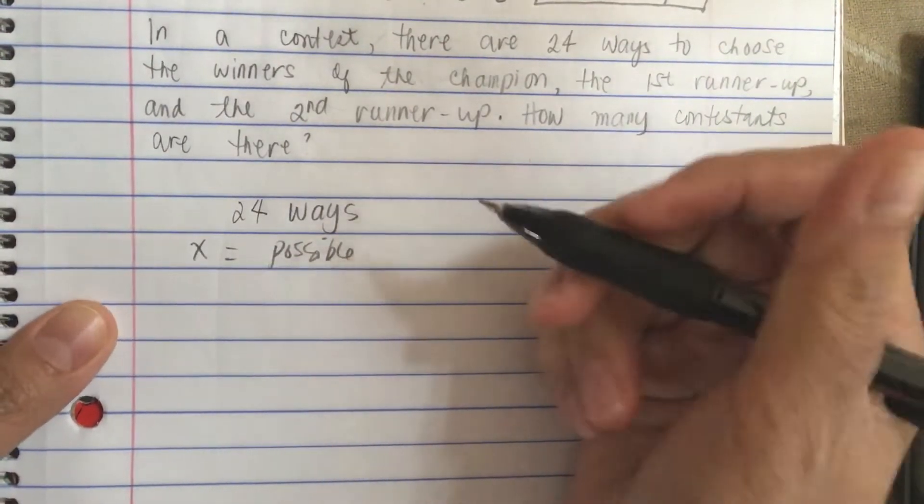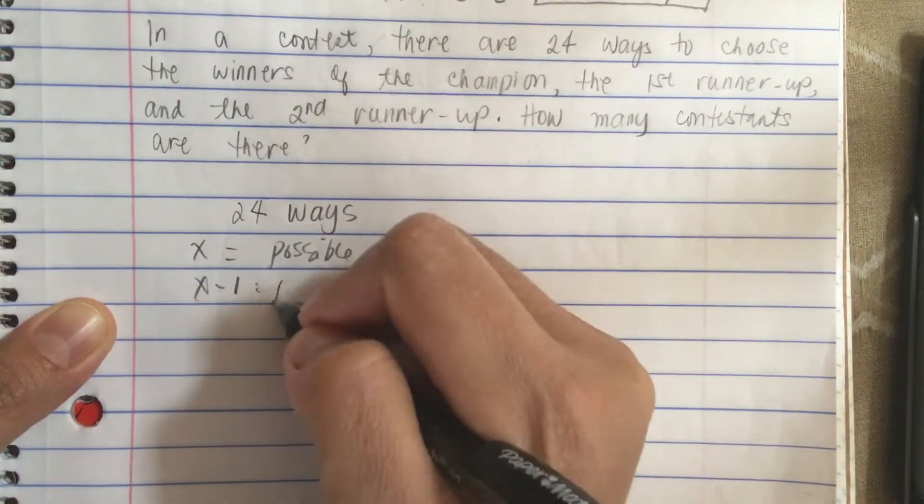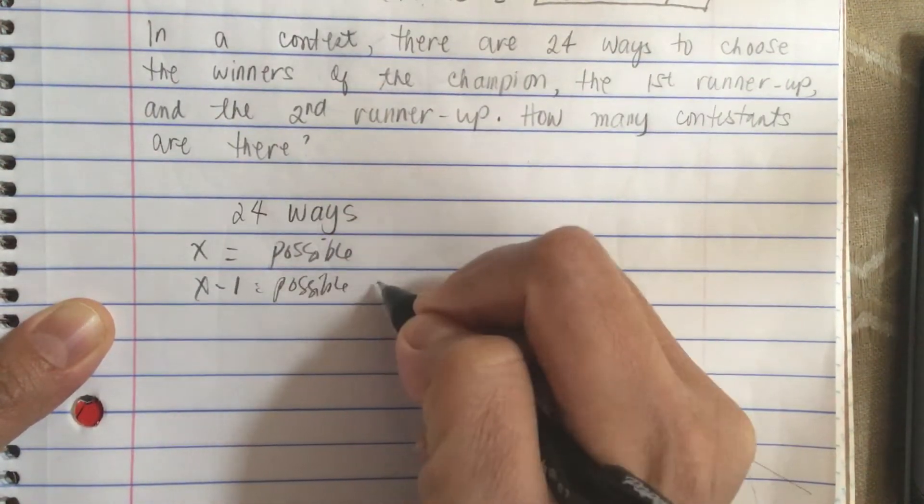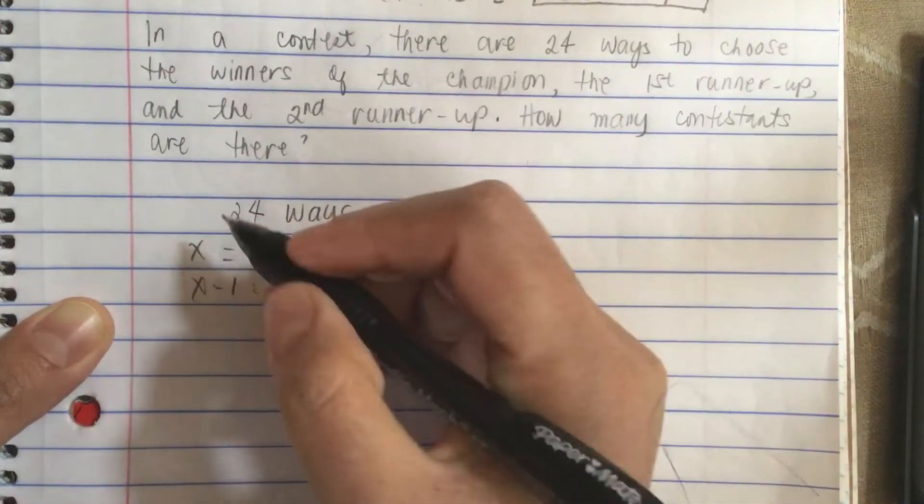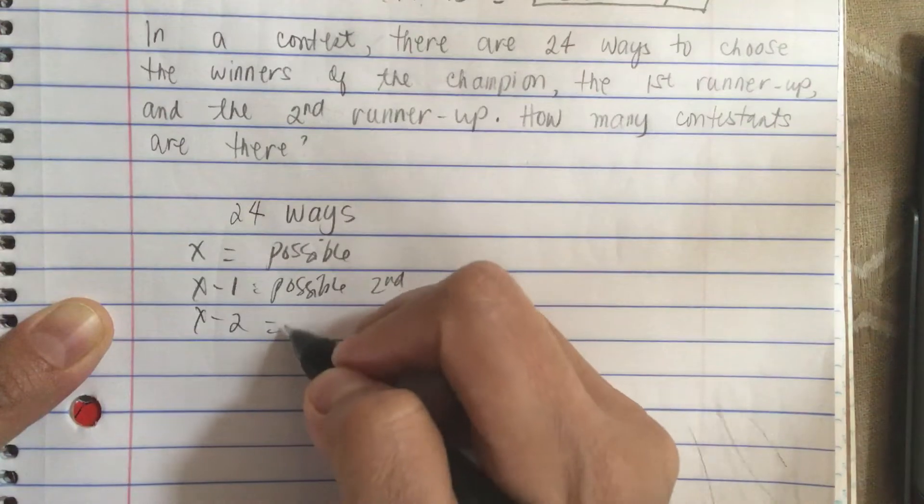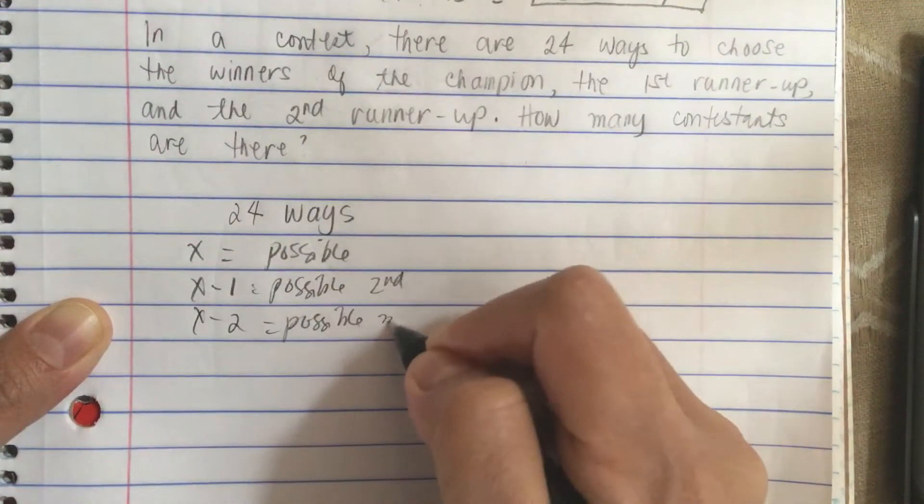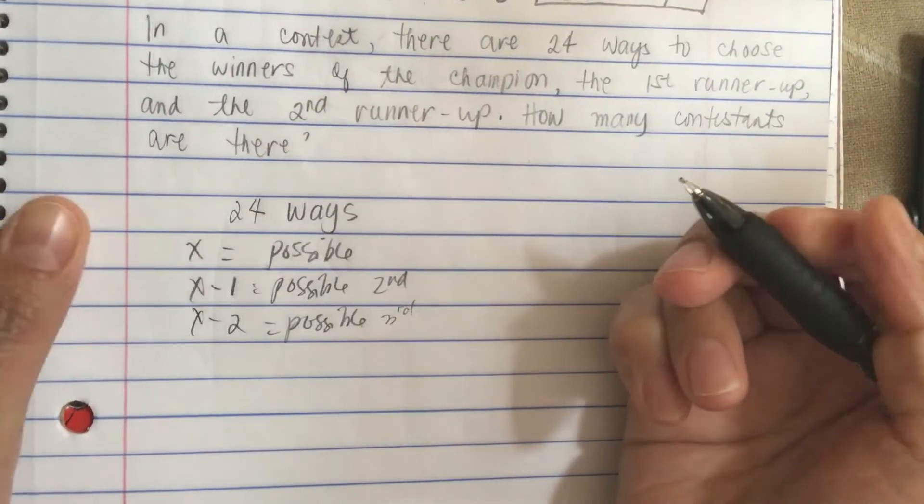X minus one is the possible for second, and then x minus two is the possible third runner up. So now the permutation.